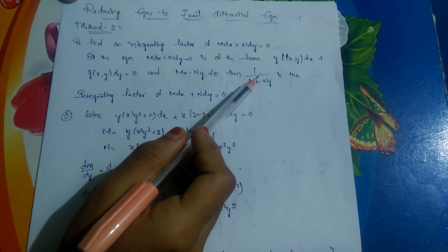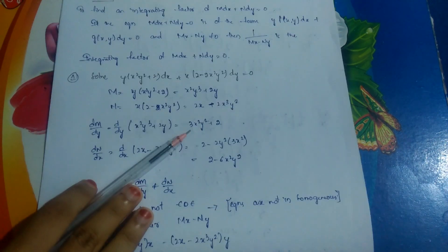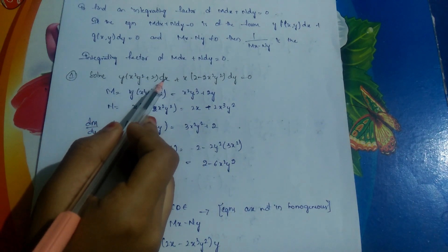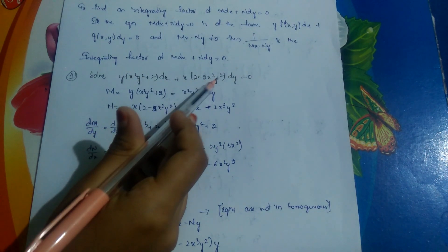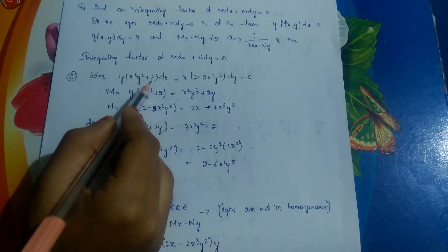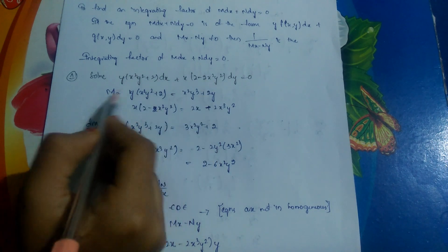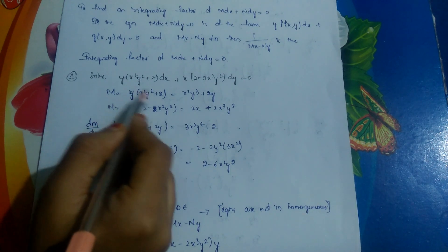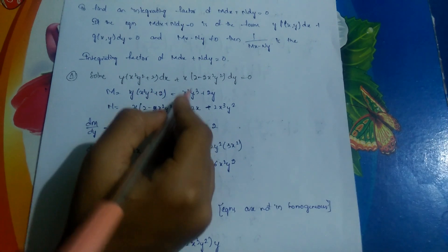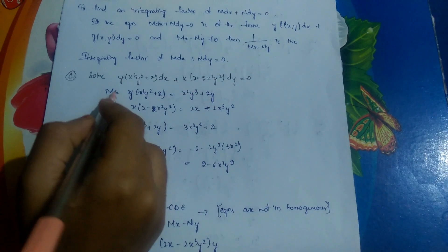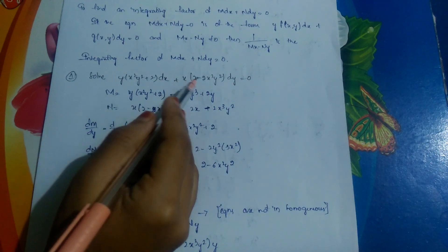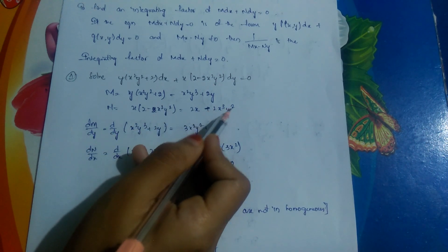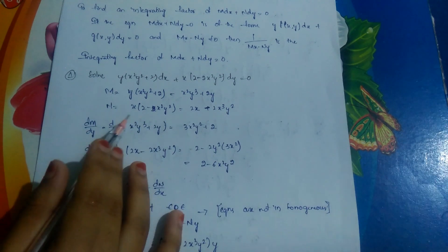Let's see the problem: Solve y(x²y² + 2) dx + x(2 - 2x²y²) dy = 0. It is in the form M dx + N dy = 0. M = y(x²y² + 2) = x²y³ + 2y, and N = x(2 - 2x²y²) = 2x - 2x³y².